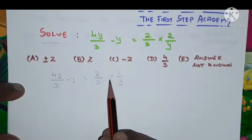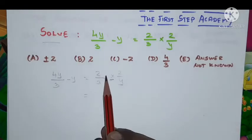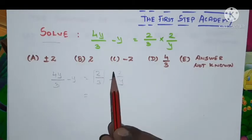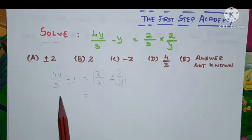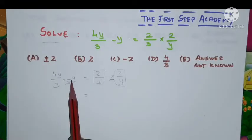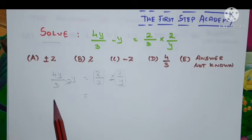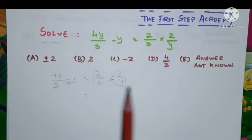In the right hand side, we have only product. Hence, we can directly multiply these two terms. But in left hand side, we have operation called subtraction. Hence, we have to do cross multiplication.